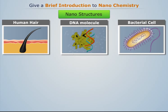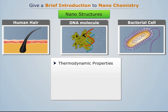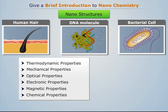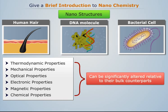Nanostructures are more useful because their thermodynamic, mechanical, optical, electronic, magnetic and chemical properties can be significantly altered relative to their bulk counterparts.